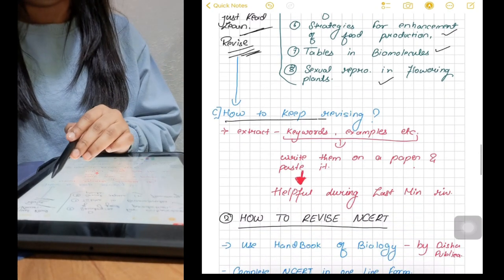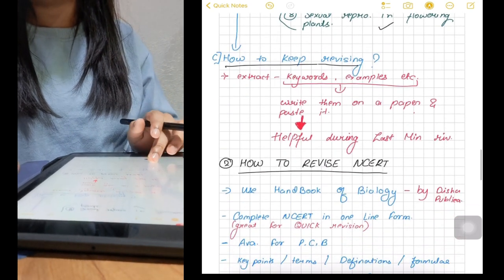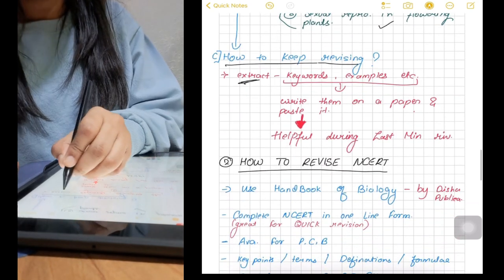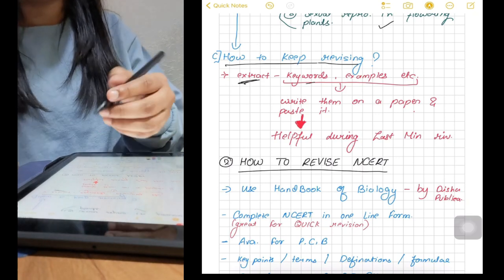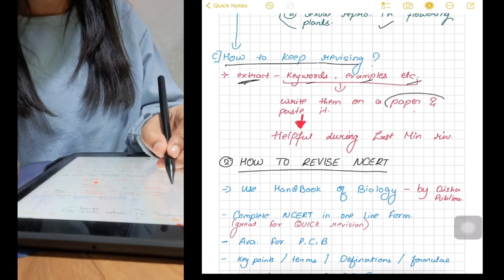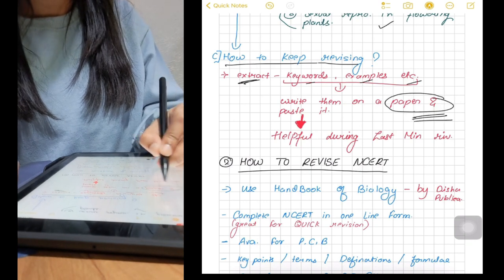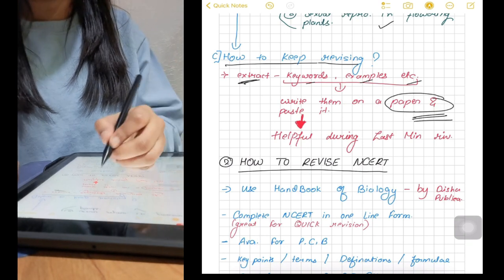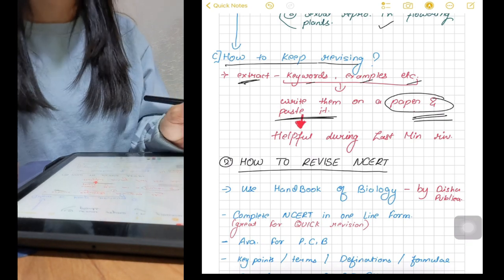Now how to revise these topics or chapters? Just do one thing, extract all the keywords, examples, etc. and write them on a paper and paste them on your wall so that you can read them every day. Initially, it might feel boring to read same thing again and again but this is going to help you in those last minute revision time.